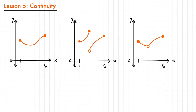So what is continuity? What does it mean for a function to be continuous? Well, if a function is continuous everywhere in its domain, it means that it has no interruptions and it's unbroken. So this would mean there's no jumps, no holes, or any gaps of any kind.